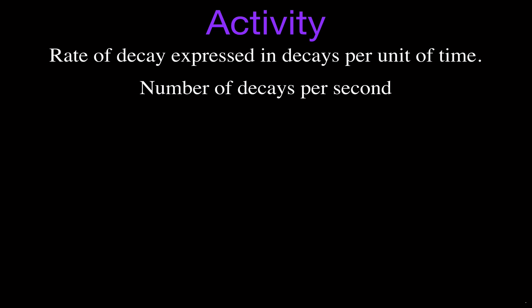When you have a radioactive sample, it's going to be decaying — sending out some energy or some mass, like alpha, beta, and gamma particles. You can measure the number of times that occurs per second, and that gives you the activity.